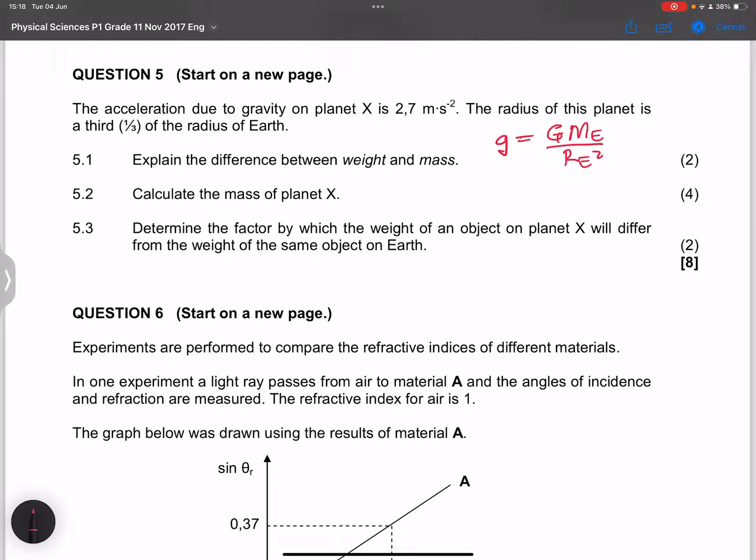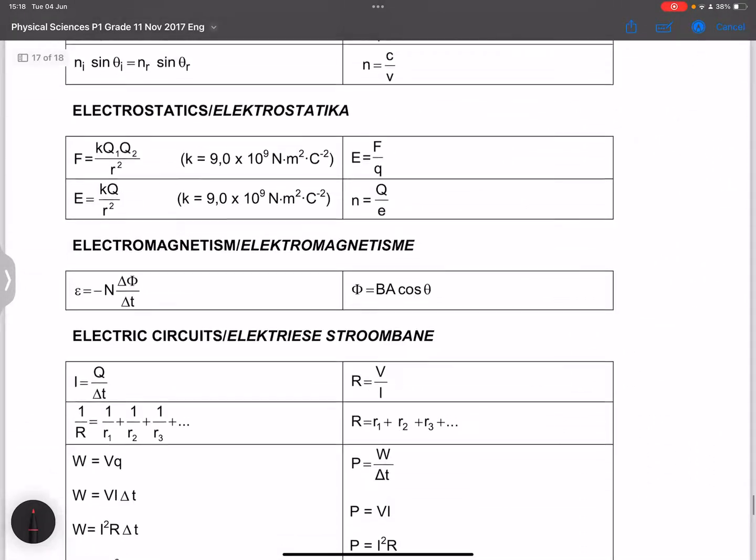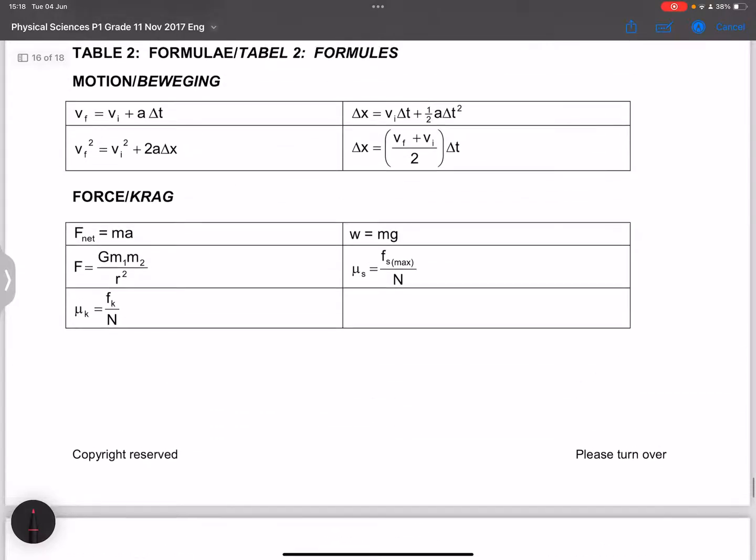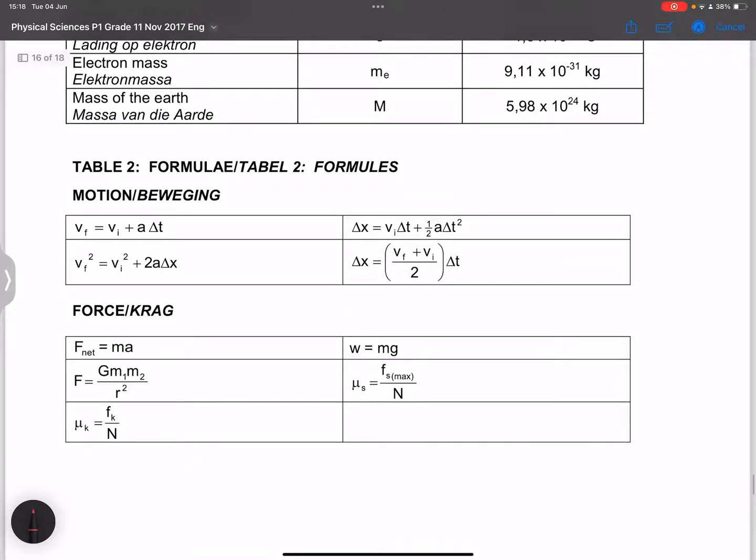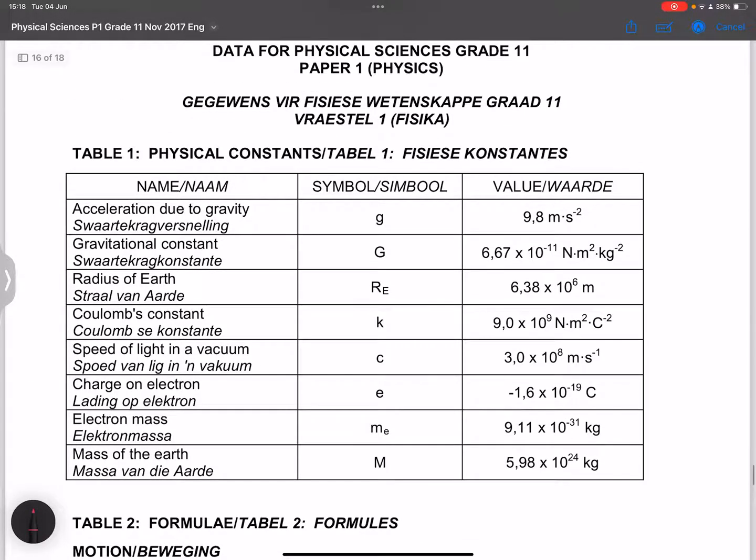Now we know on the Earth it would be 9.8, but on this planet the gravitational acceleration is 2.7. So this is going to be 6.67 times 10. And by the way, please remember that you're given all of these constants. That's the universal gravitational constant. So we are given that value for G, that's 6.67 times 10 to the minus 11.